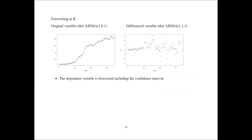Another topic we can discuss is forecasting in R. After we estimate the model, we can use it for prediction of the future. After estimating the ARIMA(1,0,1) model, we can predict forward — you see the prediction and the confidence interval around it. On the difference variable, we can again use a prediction, but the variance is very large, so the confidence interval is much wider. That's all I had for the Time Series ARIMA model example.